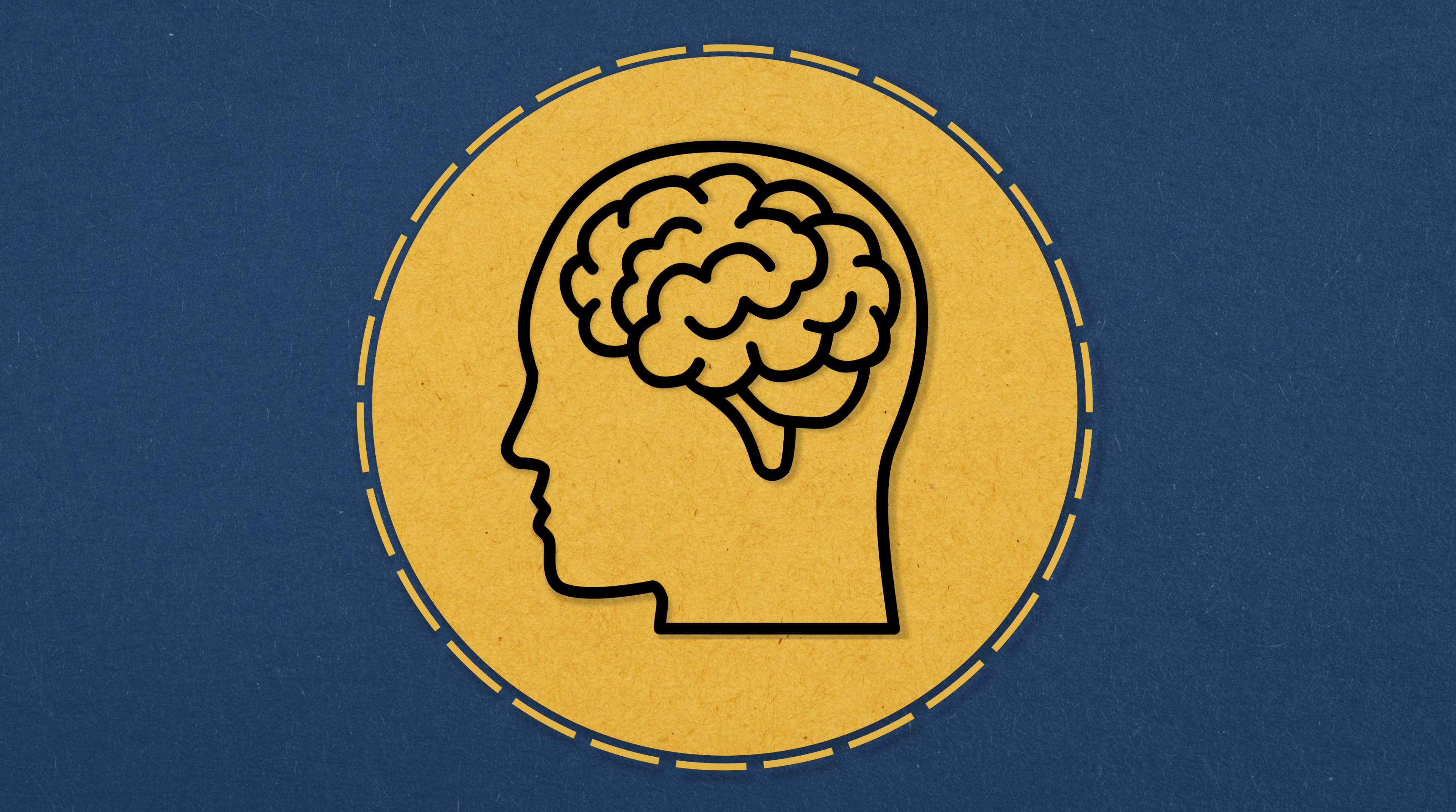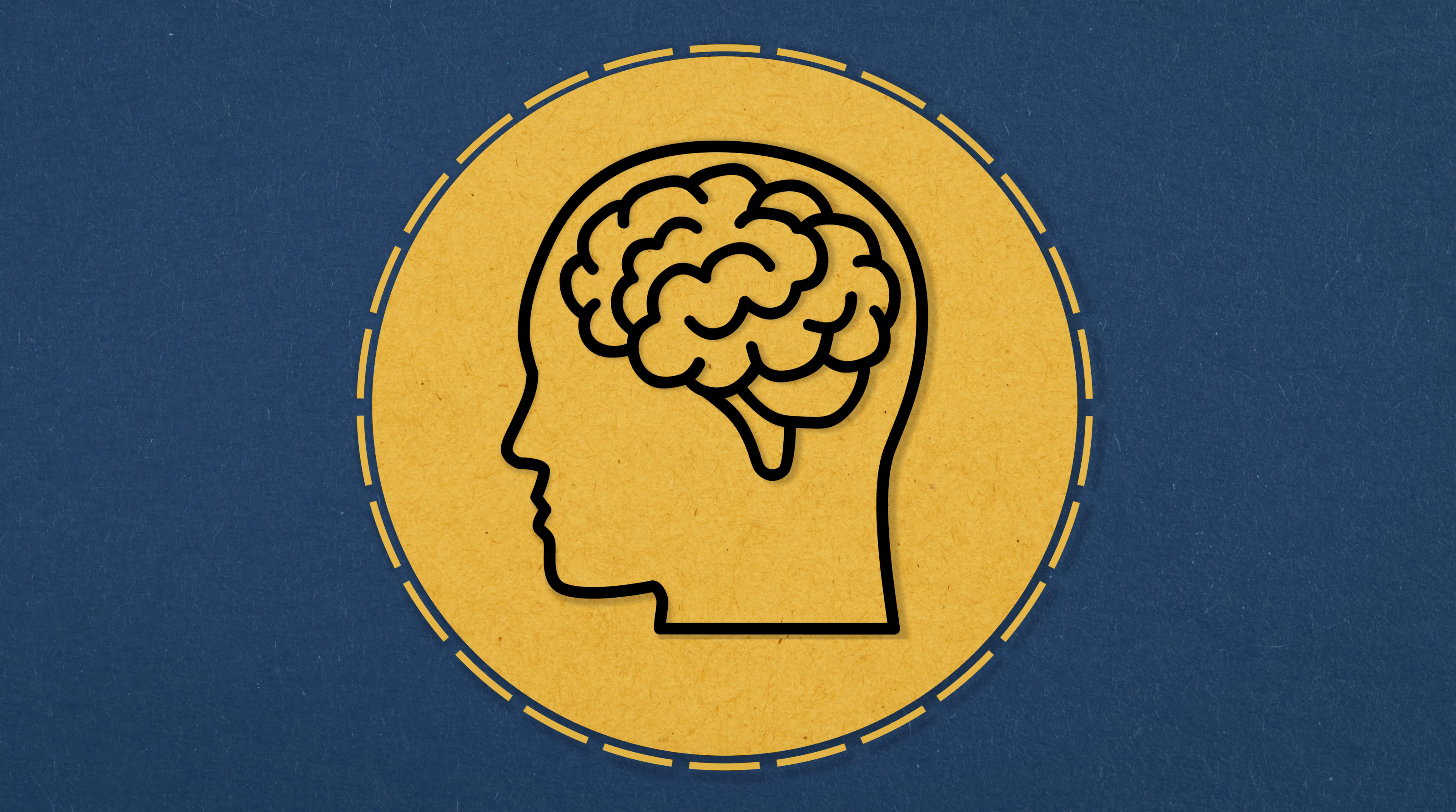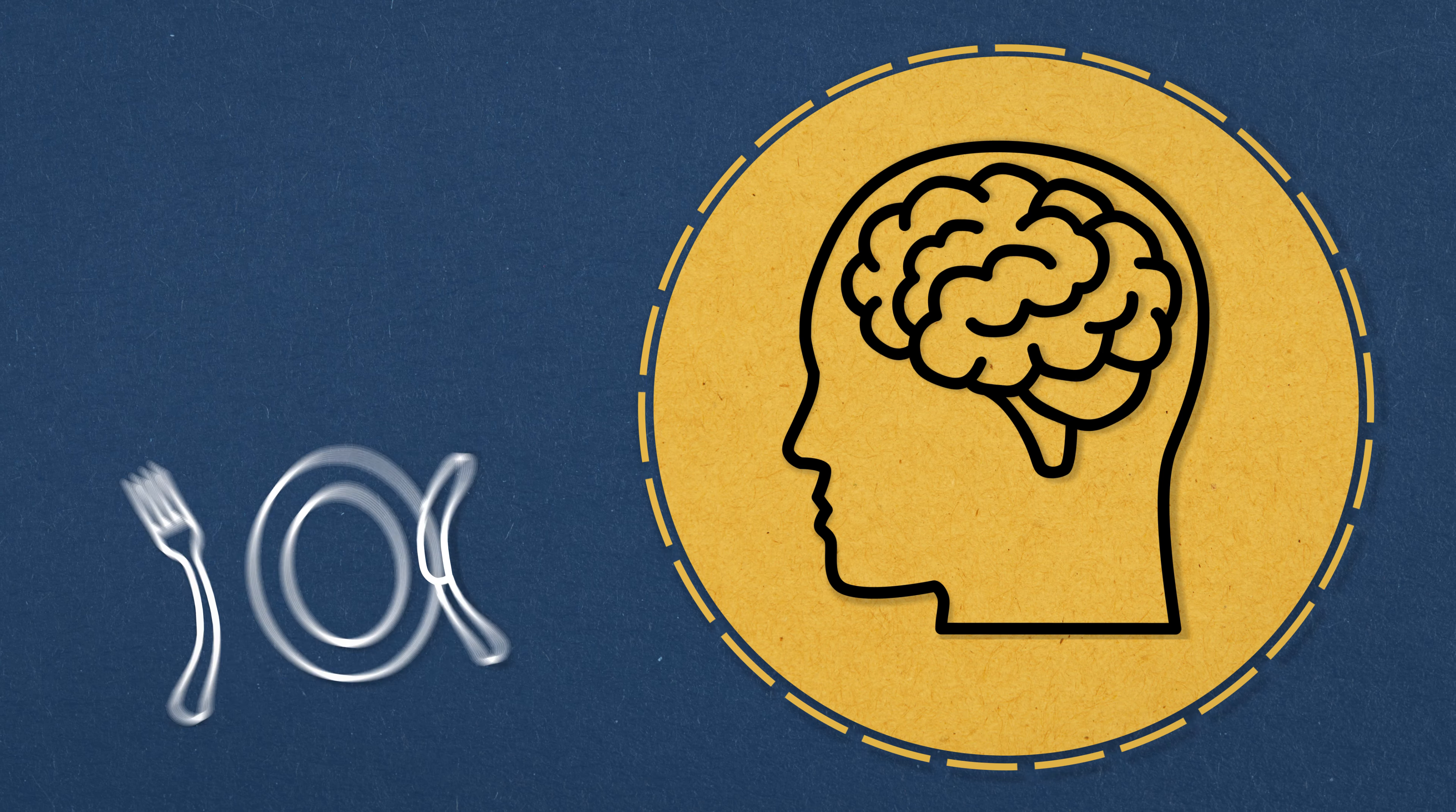Your brain is keenly aware of what's going on inside your body at all times. Some things are obvious, like when you feel hungry or thirsty.